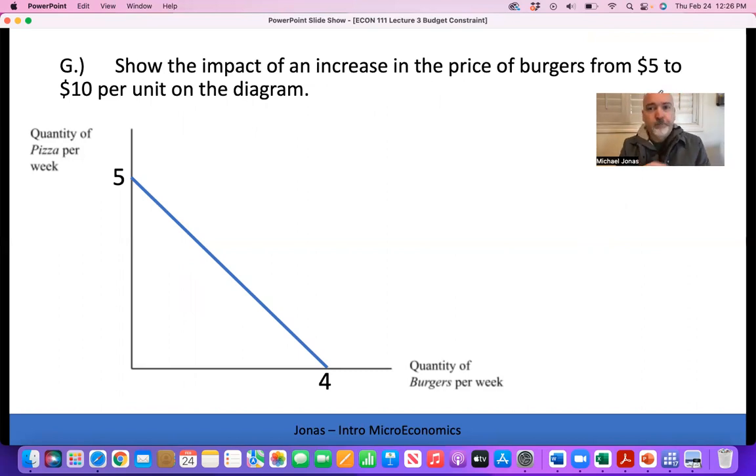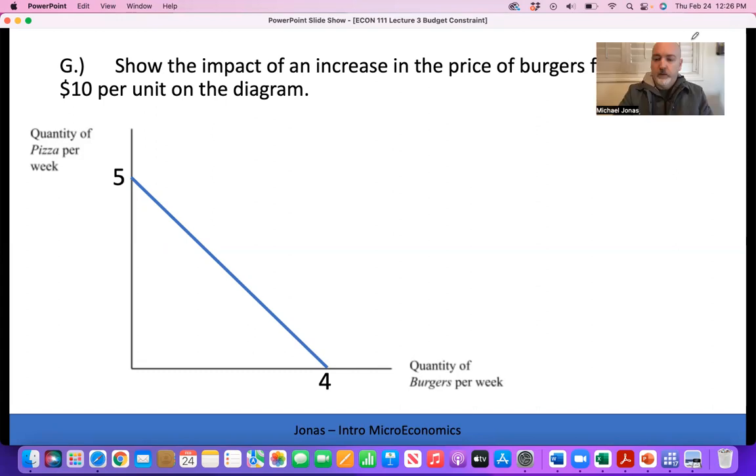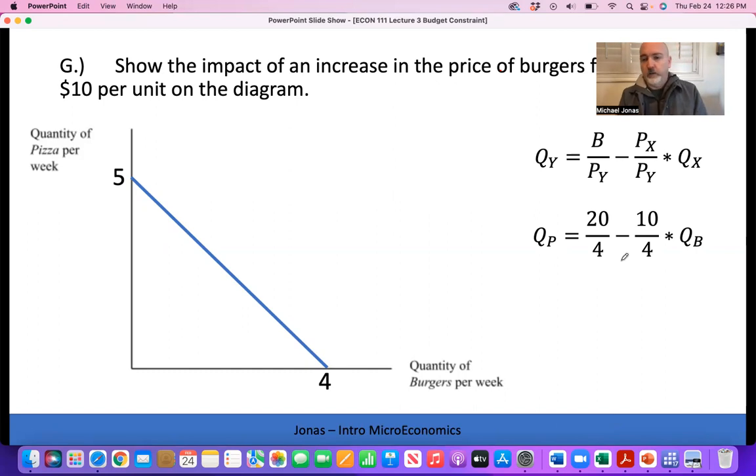Question G - now things start to change. We're going to use the budget constraint to show the dynamics of consumer behavior. Show the impact of an increase in the price of burgers from $5 to $10 per unit on the diagram. You can do this with the equation or with the diagram. We're leaving the budget the same, leaving the price of our Y good the same, but the price of X has doubled.